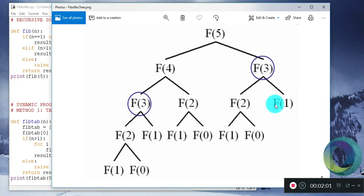The problem is that F of 3 is computed twice, F of 2 is computed thrice, and F of 1 five times. This is a waste of computation. What dynamic programming does is it avoids these repeated computations. So instead of computing these values multiple times, we will store them.